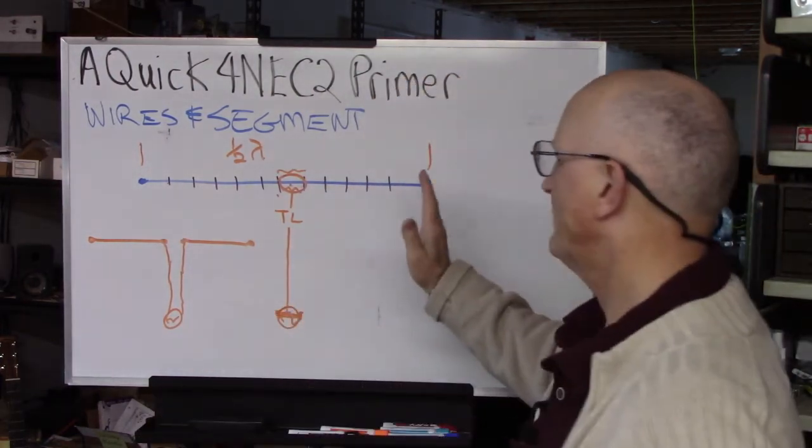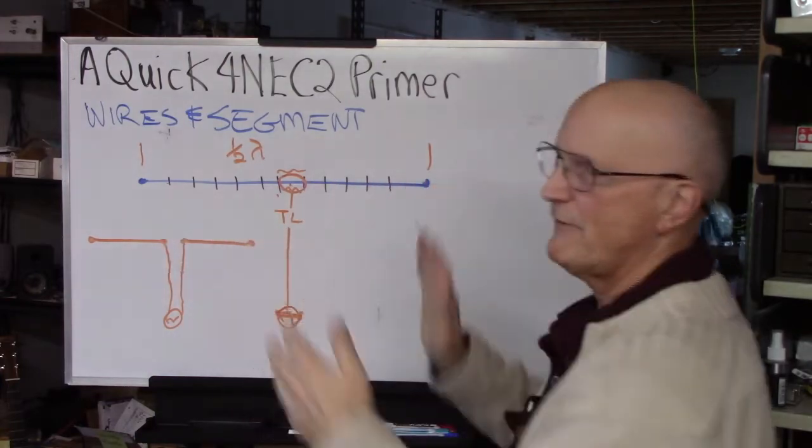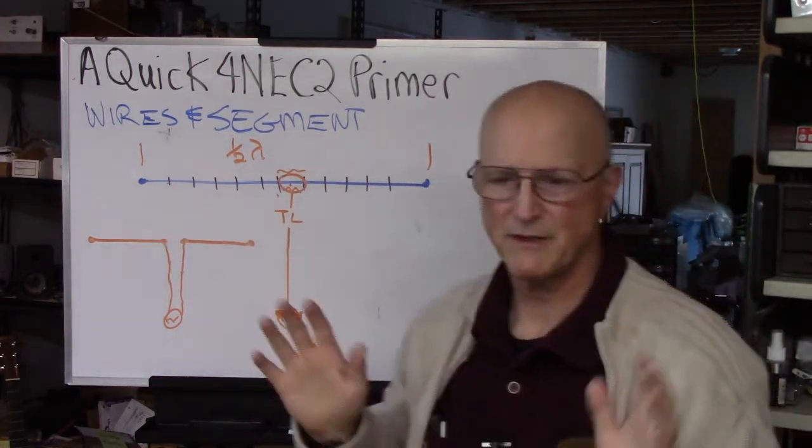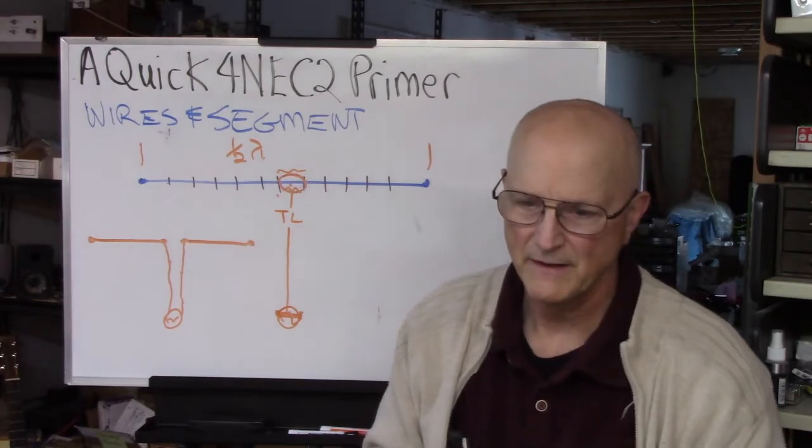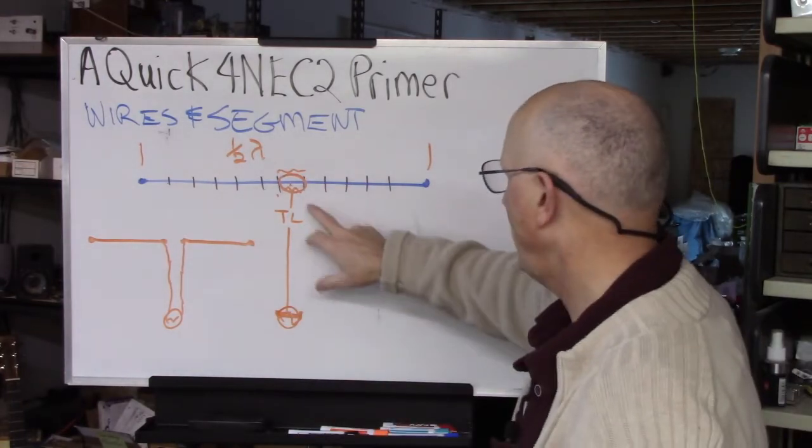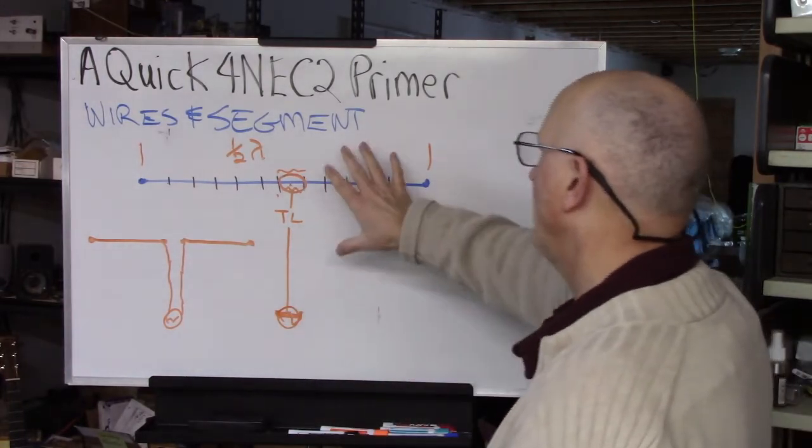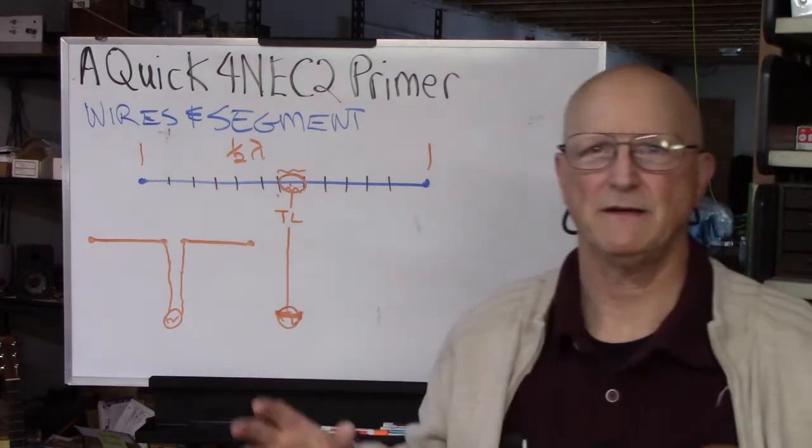And there are specific rules about how big the segments have to be relative to each other and various things, but I'm not going to get into that here. So this is how you add sources. And, and what about traps? I want to make a trapped antenna.